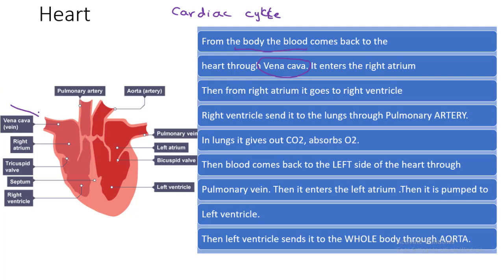Blood enters the heart through the vena cava and it reaches the right atrium. Then from the right atrium, it goes to the right ventricle. Here you can see the tricuspid valve — this opens when the blood is passing, and as the blood reaches the ventricle, the tricuspid valve closes. Then from the right ventricle, blood goes to the lungs through the pulmonary artery.